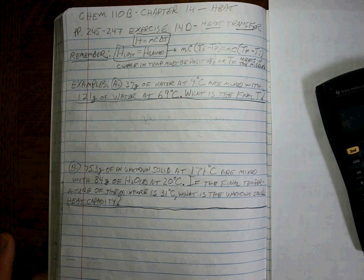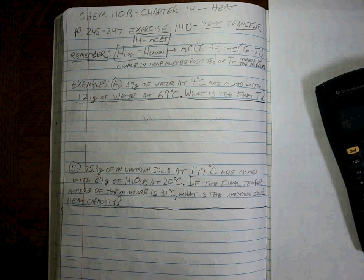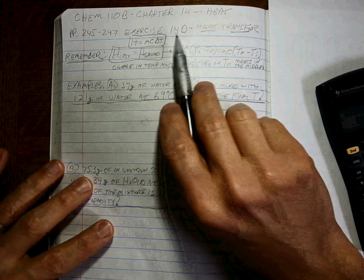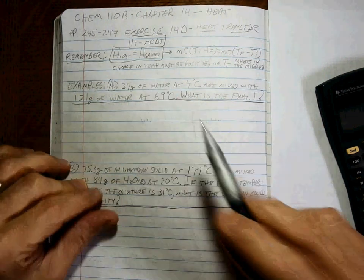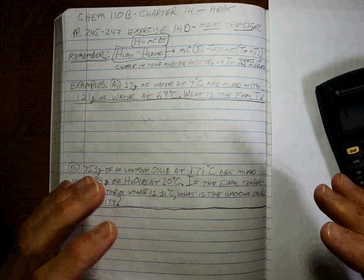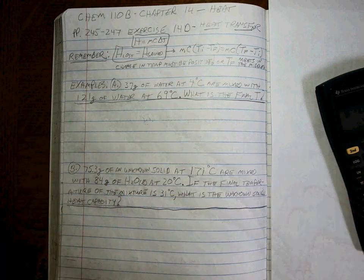Alright, let's roll. Here's the next kind of problems with heat, and that is heat transfer. This is exercise 14D, pages 245 and 247. Think about a thermos where all the heat or all the cold is trapped inside.